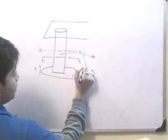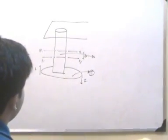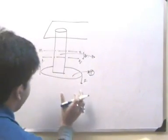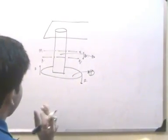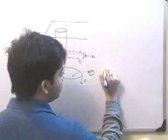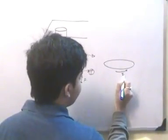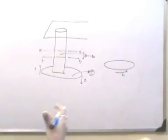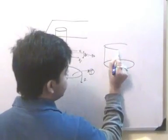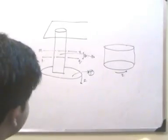The distance between planes Mn and Pq is dx. Due to the torque applied at the circular cross-section defined by plane Pq, some kind of shearing stress is developed at Pq, that is, at that circular cross-section. This is my Pq and this is my Mn.